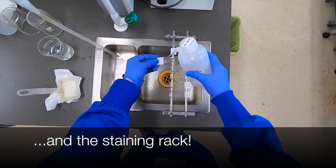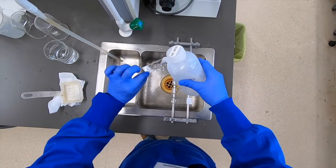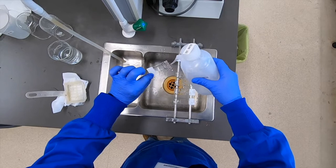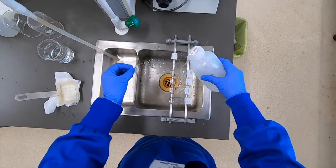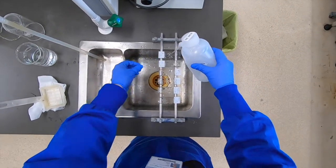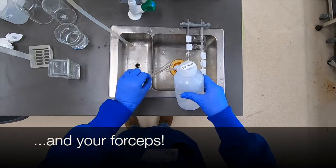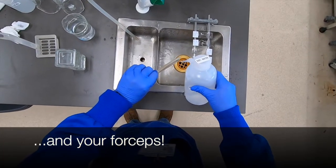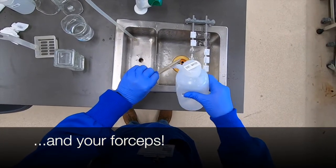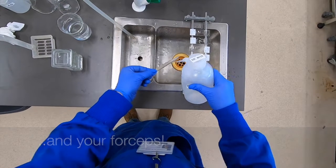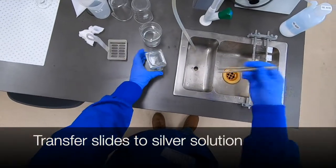And there's no harm in overdoing this. You really want to make sure that any traces of tap water are no longer present on the slide when it goes into the silver solution. Including your forceps, give them a good rinse too. So basically anything that's going to come in contact with those slides before going into the silver.